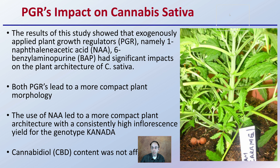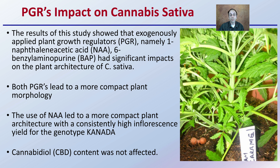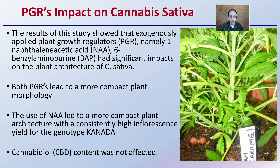PGRs are important for cannabis sativa. The results of this study showed that these externally applied plant growth regulators, abbreviated PGRs — mainly NAA and BAP — had significant impacts on the plant architecture of cannabis sativa. Both of these PGRs led to more compact plant morphology. The use of NAA led to more compact plant architecture with a consistently high inflorescence yield for the particular genotype studied. CBD, or cannabidiol content, was not affected — good to see that morphology was affected but not the cannabinoid produced.